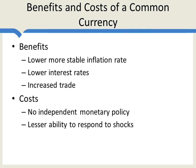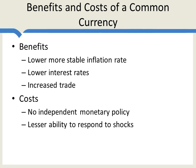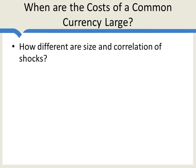And that would turn out to have implications later. The cost of the common currency is no independent monetary policy and a lesser ability to respond to shocks. So when are the costs of a common currency likely to be large? A key cost of having the same currency as another country is a reduced ability to respond to national shocks.